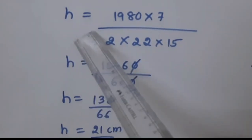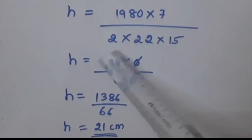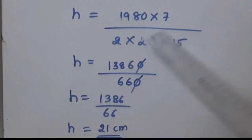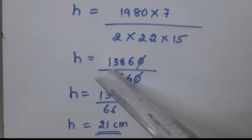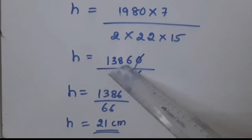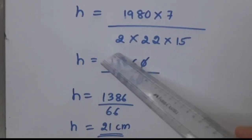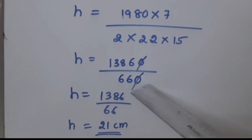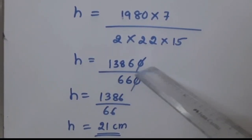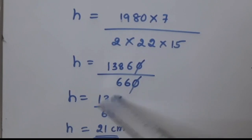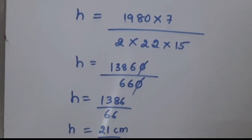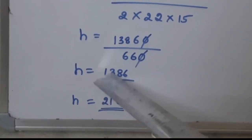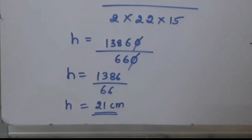H is equal to 1980 multiplied by 7 upon 2 into 22 into 15. 1980 into 7 is 13,860 upon 2 into 22 into 15 is 660. 13,860 upon 660 is equal to 21 centimeter. Therefore, height is equal to 21 centimeter.